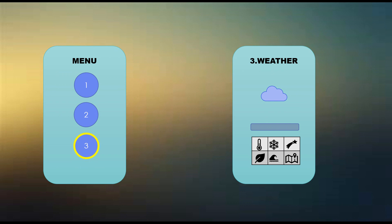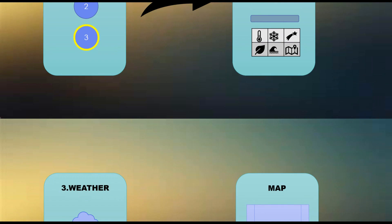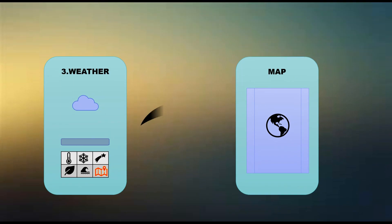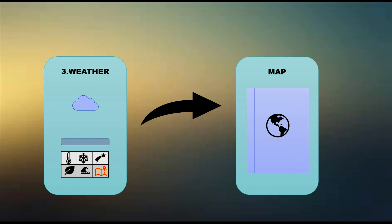After that, the third option is for the weather, so you can see the weather. And there will be an option for maps also. You can see the map icon here. When you click on it, it will open Google Maps so you can see your location and nearby places. That's all for the layout.